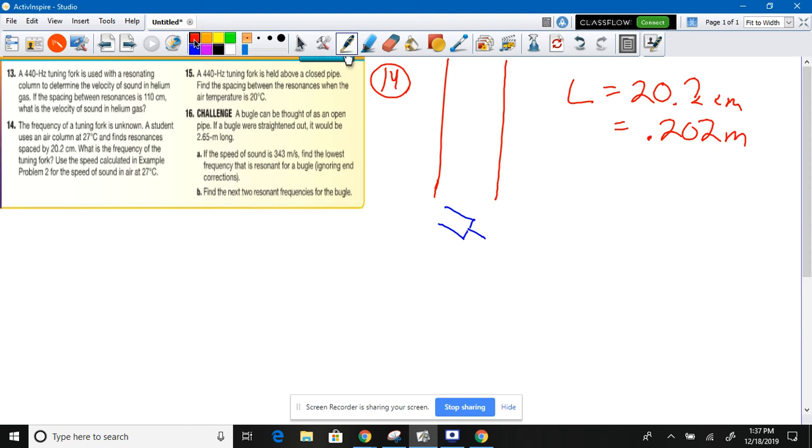What's the frequency of the tuning fork? Use the speed calculated in example problem for the speed of sound in air at 27 degrees. In your textbook, it says the speed is 347 meters per second. That's the velocity of sound in air. So we have length. Can we find the wavelength of the actual wave? Yes, we can. How? Length equals one-half wavelength. So 2 times 0.202 meters is equal to your wavelength. So that's 0.404 meters is equal to your wavelength.